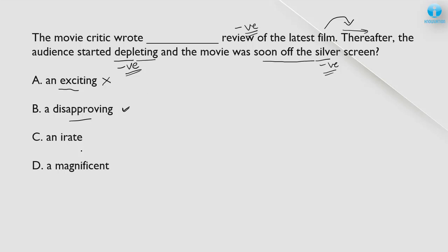Moving to Q2: 'The two nations have been at war for over 100 years. All attempts to sign a peace treaty and end the tension have been [dash].' The countries are still at war, so the attempts clearly failed. 'Belegrant' means having conflicting opinion but doesn't fit 'attempts.' 'Effective' is wrong — if attempts were effective, they wouldn't still be fighting. 'Useful' is wrong for the same reason. 'Fruitless' is correct — the attempts have not given any result. The correct answer is fruitless.